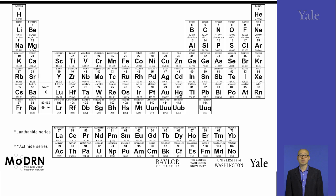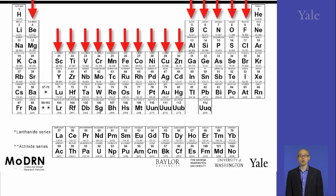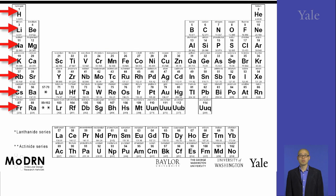Today, there are already 118 entries on the periodic table. They are arranged in the fashion of columns and rows. Each column is called a group and each row is called a period.